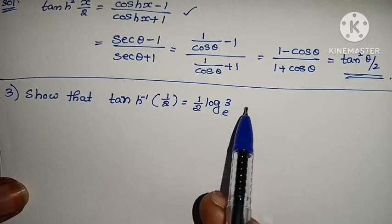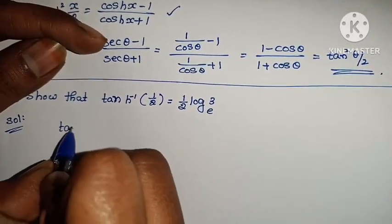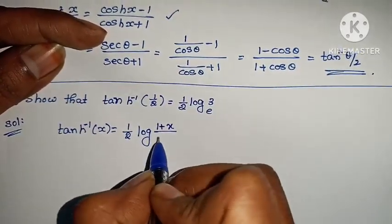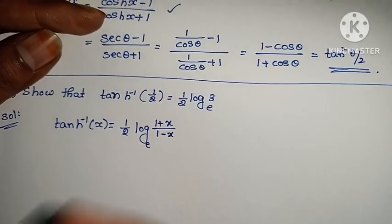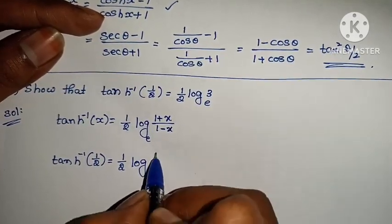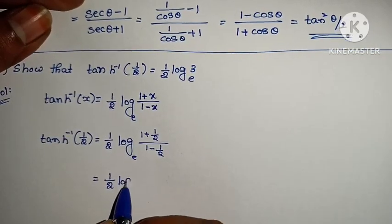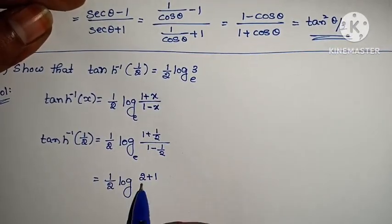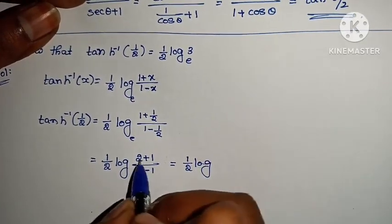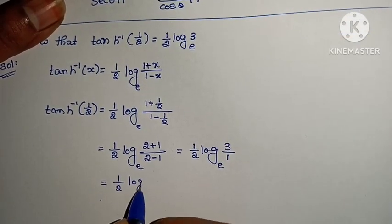Show that tanh⁻¹(1/2) = (1/2)log(3). Very simple — direct formula. The formula is: tanh⁻¹(x) = (1/2) × log((1 + x)/(1 − x)). Substituting x = 1/2: tanh⁻¹(1/2) = (1/2) × log((1 + 1/2)/(1 − 1/2)) = (1/2) × log((3/2)/(1/2)) = (1/2) × log(3). That equals (1/2)log(3), which is RHS.